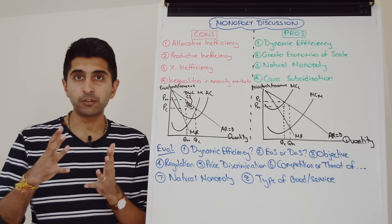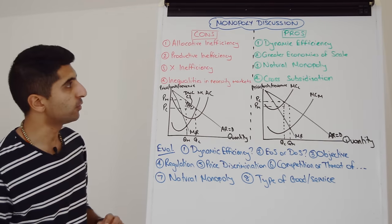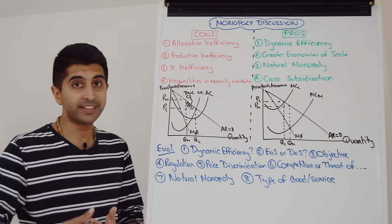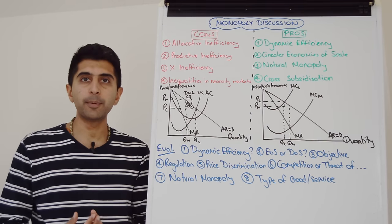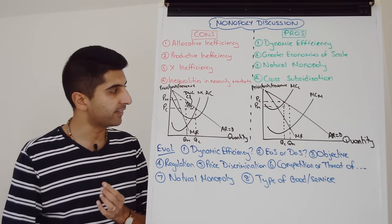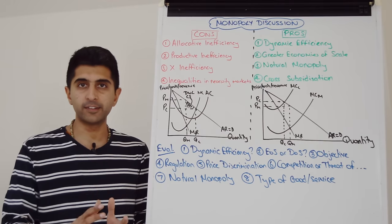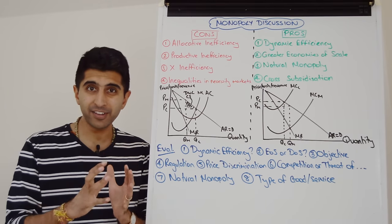Monopolies restrict output, they restrict choice, and there could be quality issues as well. The diagram here is a brilliant diagram to show the deadweight welfare loss that a monopoly creates, here isolating the deadweight loss of consumer surplus. I've made a video going through this in a lot of detail, so make sure you have this diagram learned.